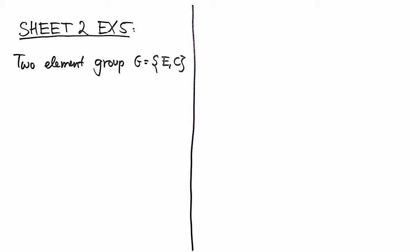So you have a two-element group, and you are to construct the most general matrix representation which is two-dimensional.